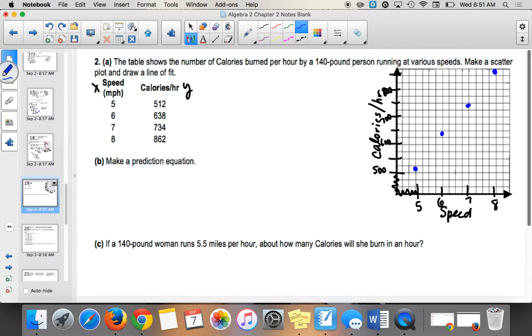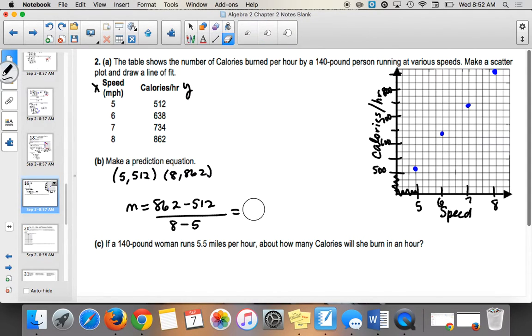So you can pick any points. I think on the homework, I had you pick the first and the last. So let's pick 5, 512 and 8, 862. So if those points are like way off, like if your last one was like down here, then don't pick that point. But if they look like it's on the line, then we'll pick those first and last. So we have M equals 862 minus 512 all over 8 minus 5. So I get 350 over 3.